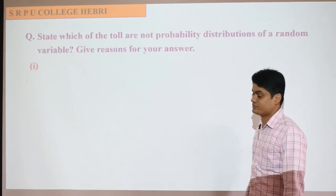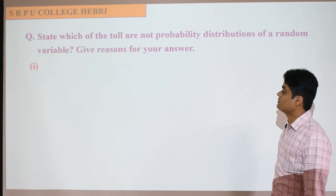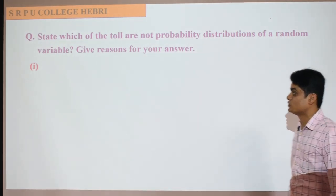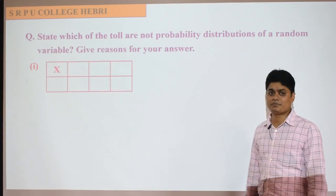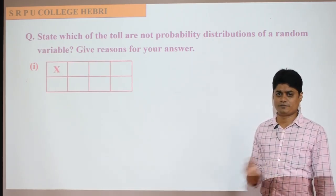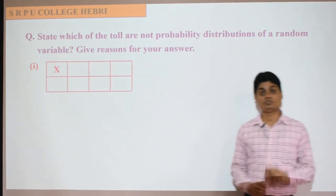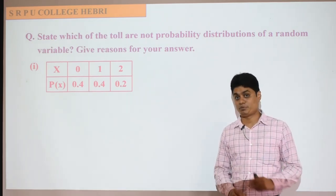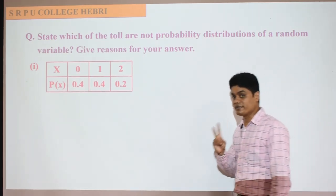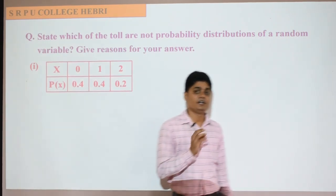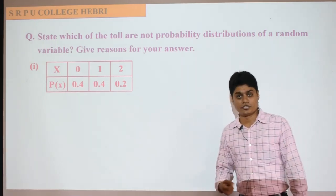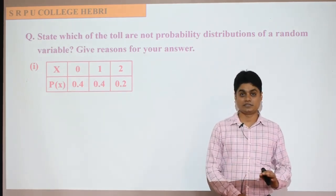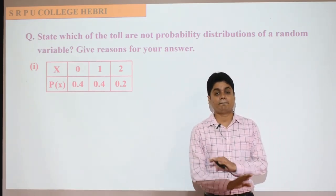The first question for today's class is: state which of the following are not a probability distribution of a random variable, and give reason if your answer is yes or no. A probability distribution will always be in table format. We just need to check whether the given table is a probability distribution or not. The condition is: the probability of each random variable must be greater than or equal to zero, and the sum of all the probabilities must be equal to one. If even one condition fails, the given distribution is not a probability distribution.